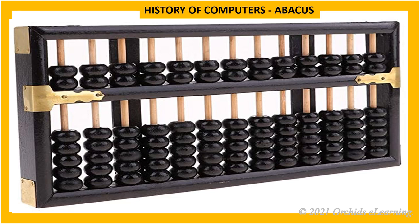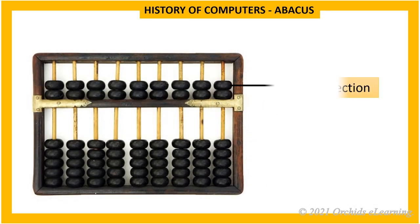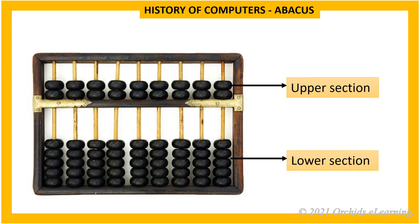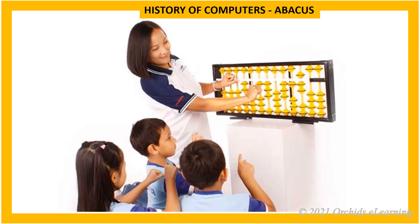Abacus: In the sixth century BCE, the abacus was invented by the Chinese. It is the first known calculating device. It is made up of a metal or wooden frame. The frame is divided into two parts by a horizontal bar and 13 vertical bars. Each bar contains seven beads — two beads are placed at the upper section and five beads are placed at the lower section. It was used to do simple addition and subtraction.